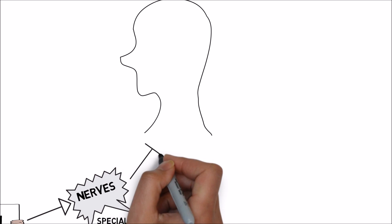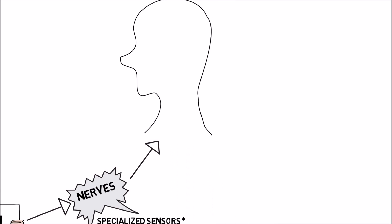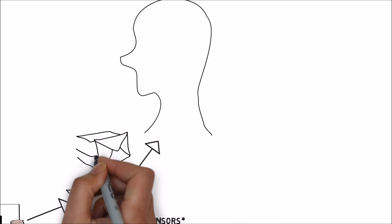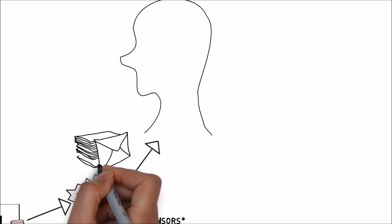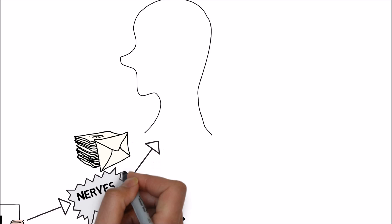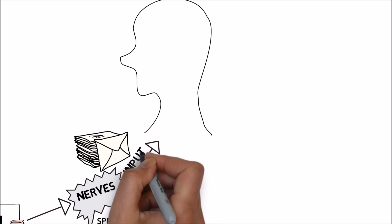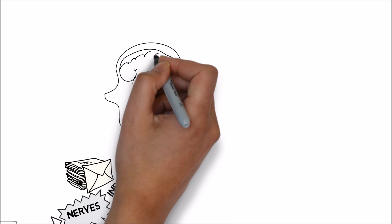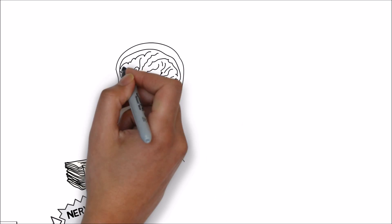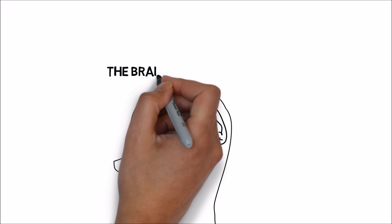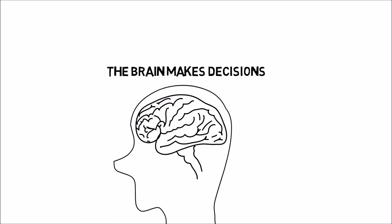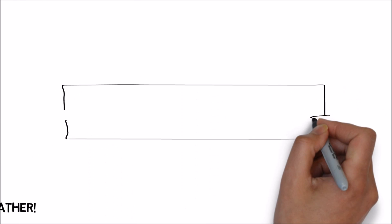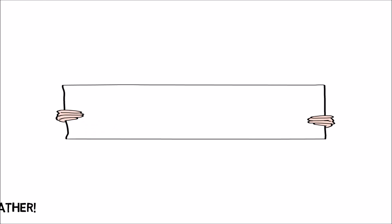So what happens next? Our nerves create messages — they create nerve impulses which become inputs into our person. Specifically, they have to travel up to our brain, where our brain has to make decisions about this information. Our brain doesn't stop here; it has to process other information.